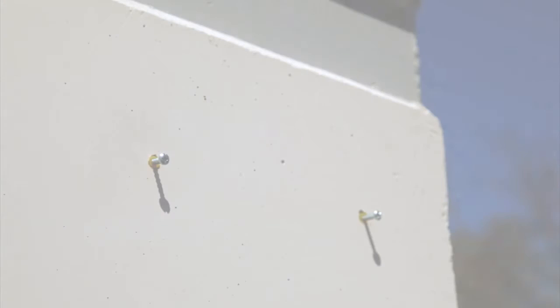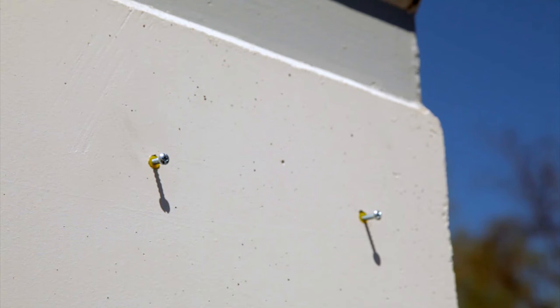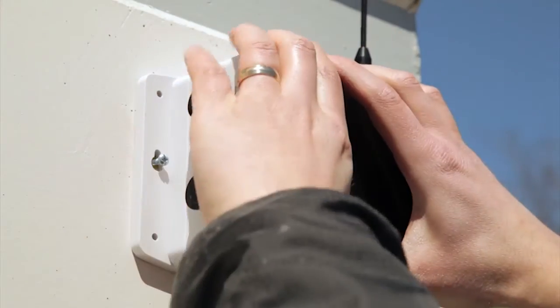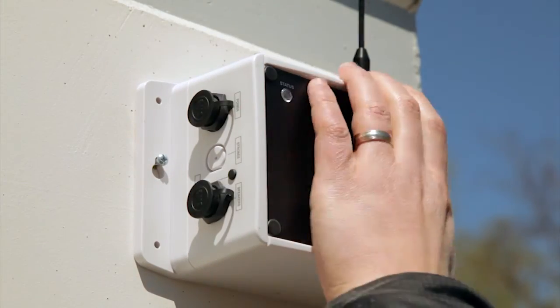Insert two screws into the anchors and screw them in until the screw heads are about a quarter inch from the wall. Place the VNS2200 unit onto the two screws and tighten the screws into the wall to secure the unit.